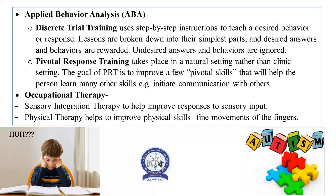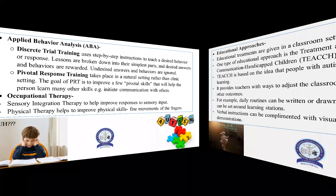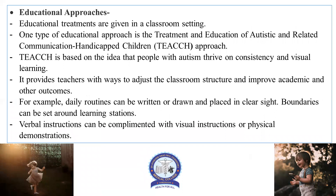Occupational therapy for autism includes sensory integration therapy to help improve responses to sensory inputs, and physical therapy to help improve physical skills like fine movements of the fingers. For educational approaches, the TEACCH (Treatment and Education of Autistic and Related Communication Handicapped Children) approach is based on the idea that people with autism thrive on consistency and visual learning. It provides teachers with ways to adjust classroom structure, for example by writing or drawing daily routines and placing them in clear sight, setting boundaries around learning stations, and complementing verbal instruction with visual instructions or physical demonstrations.